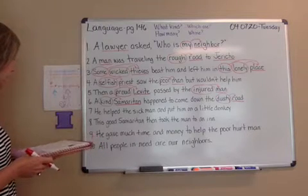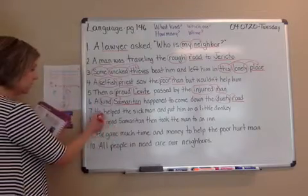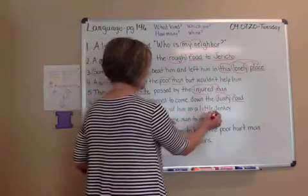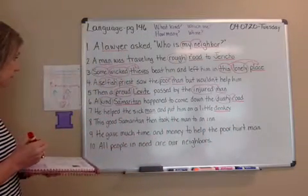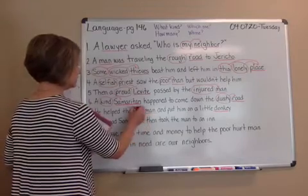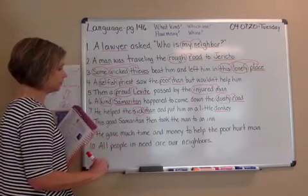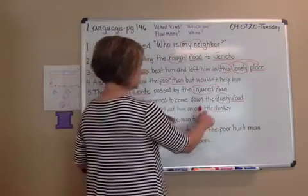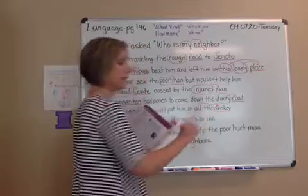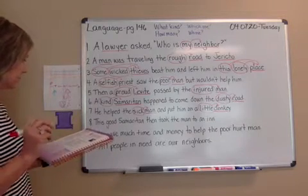Number seven: he helped the sick man and put him on a little donkey. Find nouns: man and donkey. Does sick describe man? Yes — circle and match. What kind of man? Sick. Not 'the' for now. Does little describe donkey? Absolutely — tells what kind of donkey. Not 'a' for now. You matched sick to man and little to donkey.